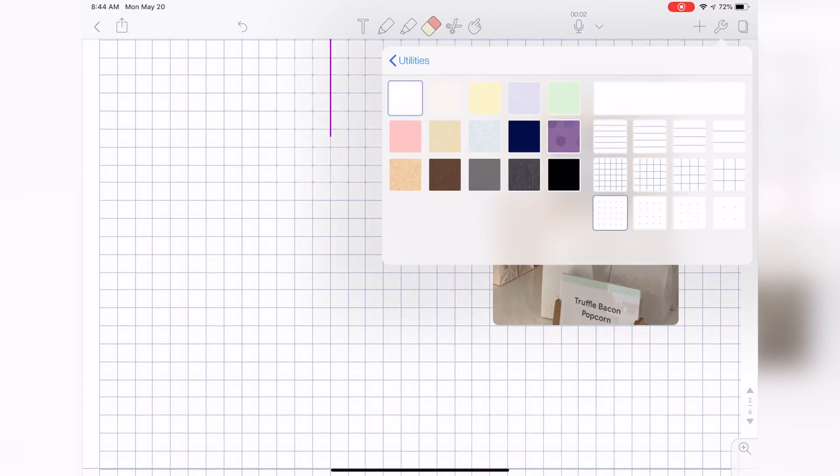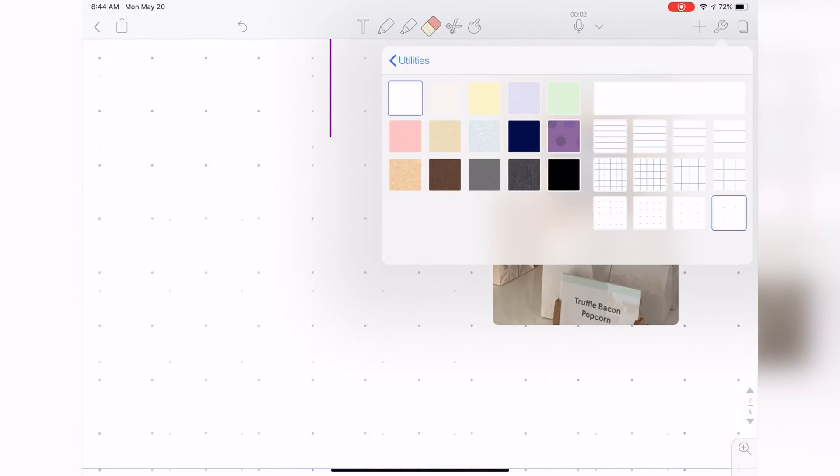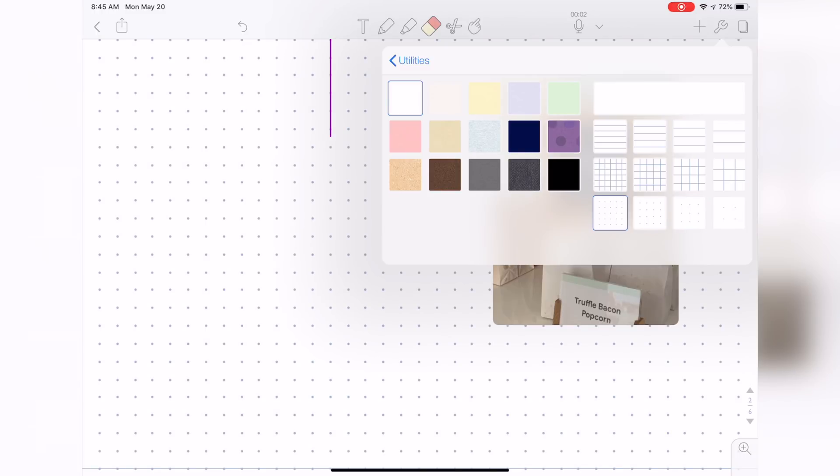Additionally, we have a couple new paper options. If I go in to paper, you can see these dotted paper looks here. That is new as well.